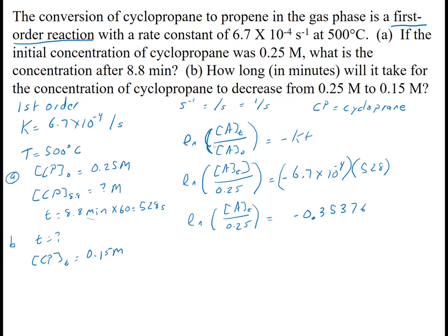If you look on your calculator with a natural log button, the second of that is E. And so I'm going to do E to both sides. What E does is it gets rid of the natural log. So what I'm left with is concentration at time T over 0.25, and E to the negative 0.35376 is 0.7020.